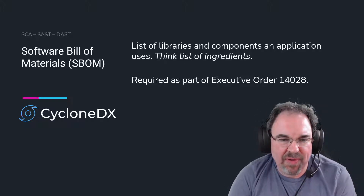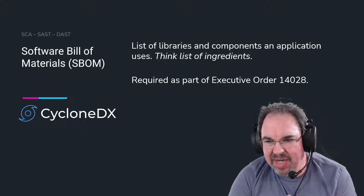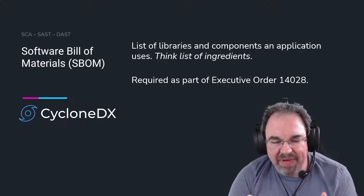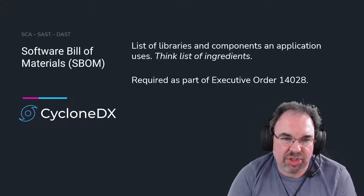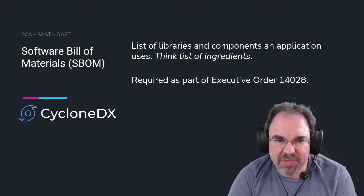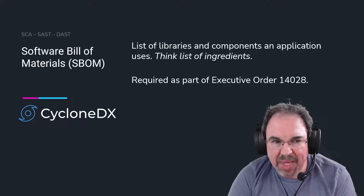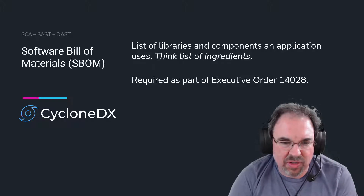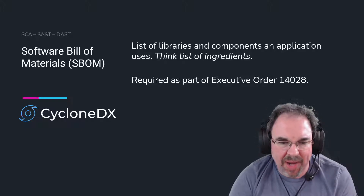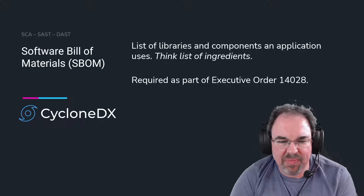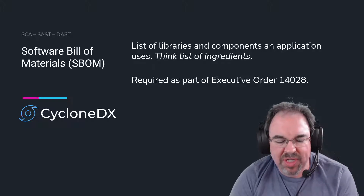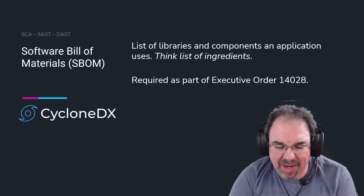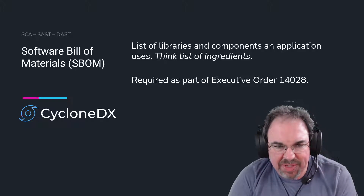As part of Executive Order 14028, it is now required that you produce an artifact that shows your software bill of materials if you're doing business with the U.S. federal government. It's very easy to do. There's a format called CycloneDX that's becoming more and more popular — it's not the only format, but there are a lot of tools that support CycloneDX to quickly produce it just by looking at the POM or whatever you're using in your build system.